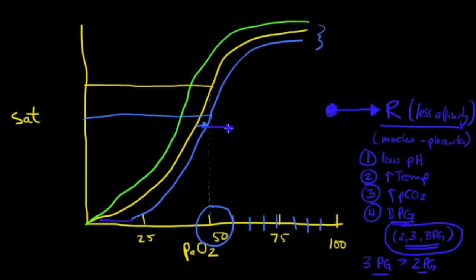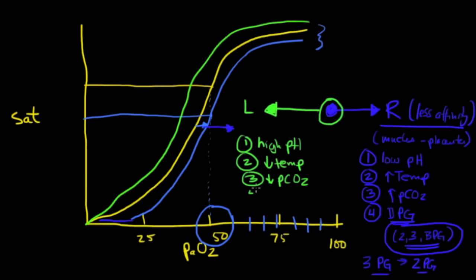Now what are some things that you would see cause it to shift to the left? These are things that you would see in the lungs. So for instance, in the lungs you're breathing off carbon dioxide. You're going to have a low acidity. So you're going to have a high pH. Of course, in the lungs, you're breathing in air which is cooler than body temperature. So generally speaking, you're going to have a low temperature. Number three, as we already mentioned, we're going to have a low partial pressure of carbon dioxide.